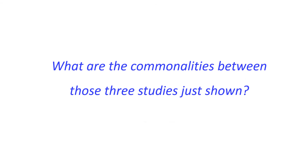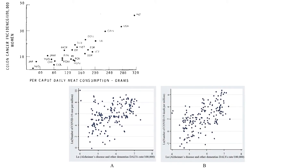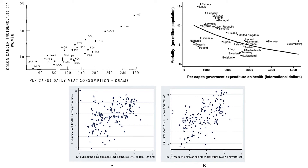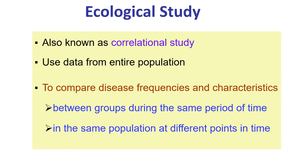So all three are very good examples of correlational or ecological studies. What are the commonalities? In each case, they were looking at country-level data and looking at correlation. Ecological studies are also known as correlational studies because we look at correlations using data from the entire population, not data on individuals. We try to compare disease frequencies and characteristics between groups during the same time period, or even the same population at different points in time.